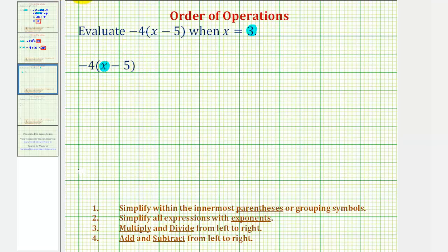we'll substitute three for x. So this expression would be equal to negative four times the quantity three minus five, when x equals three.